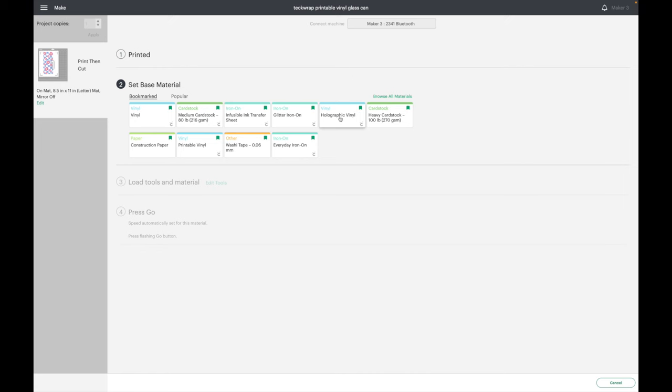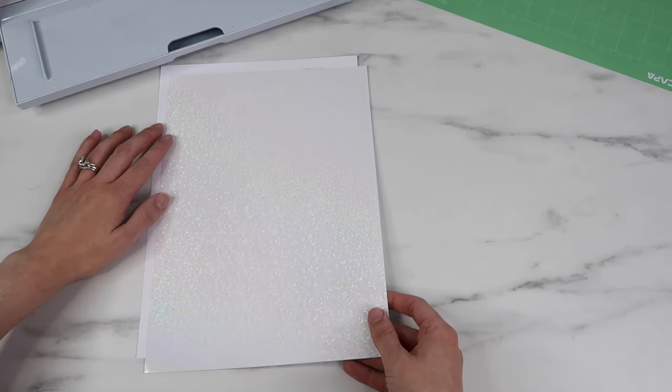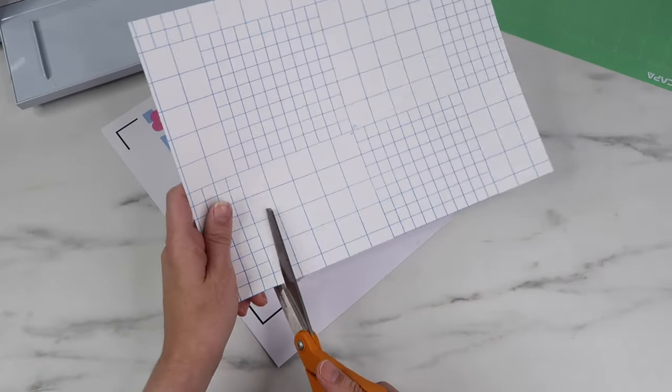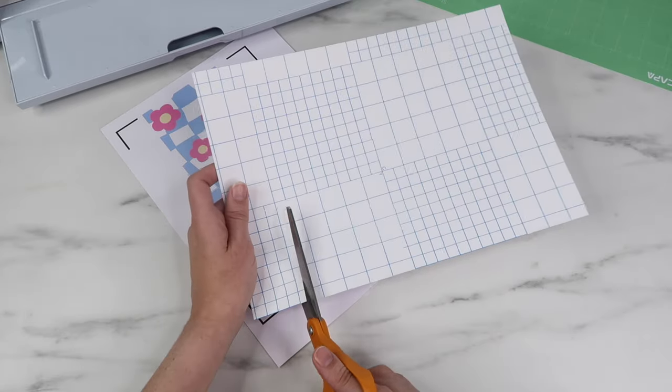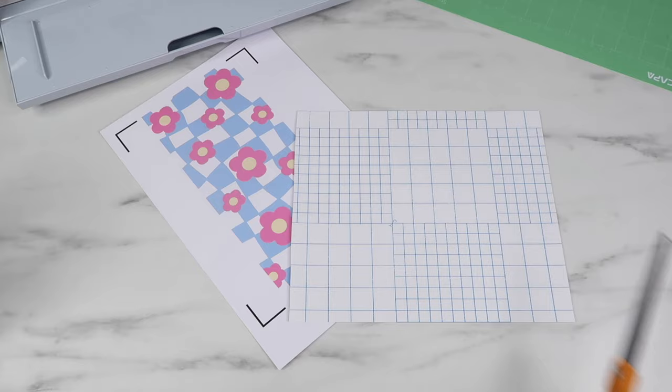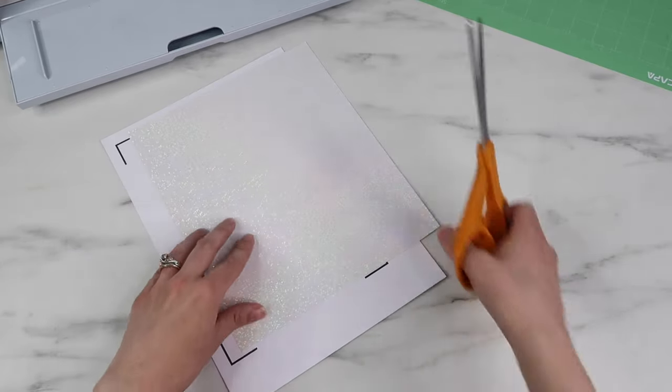For my cut setting I will select holographic vinyl. Before I have the Cricut cut out my paper, I want to add my laminate sheet on top. I cut my laminate sheet down so that it will fit over my design. If you have an Explorer, sometimes it has troubles reading those black registration lines, so you might need to cut it down a little bit more so that it's inside of those lines.